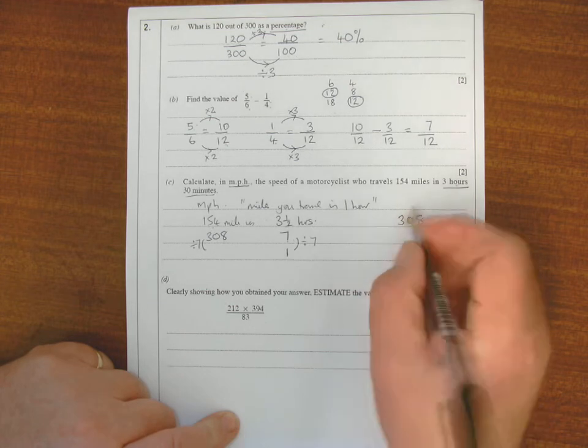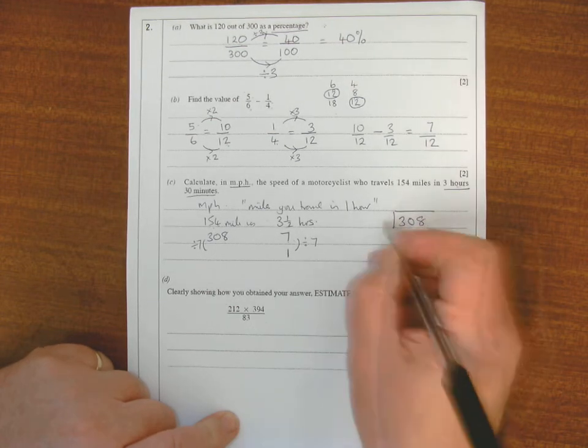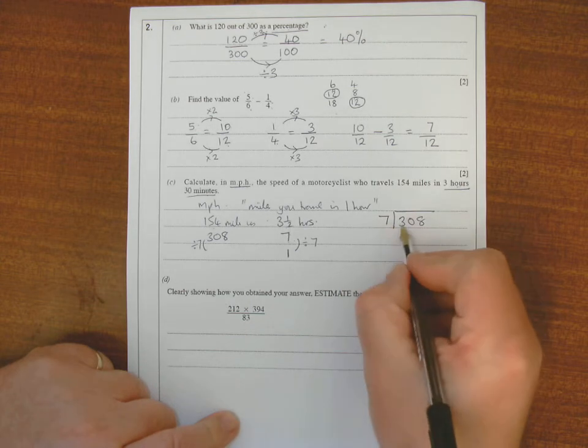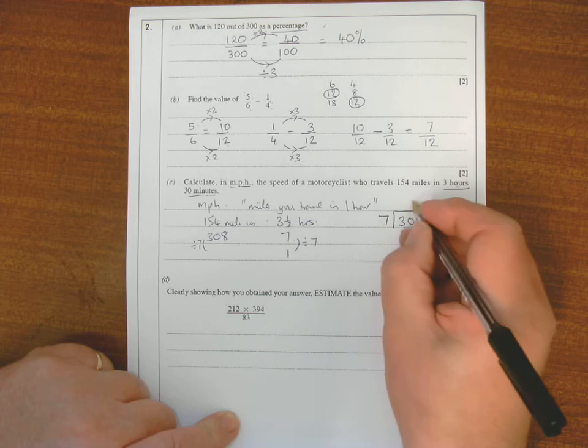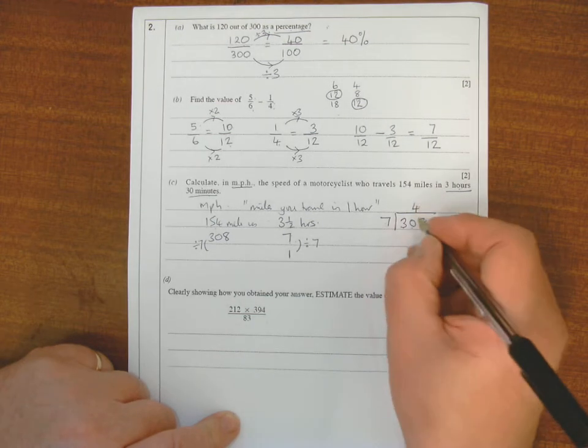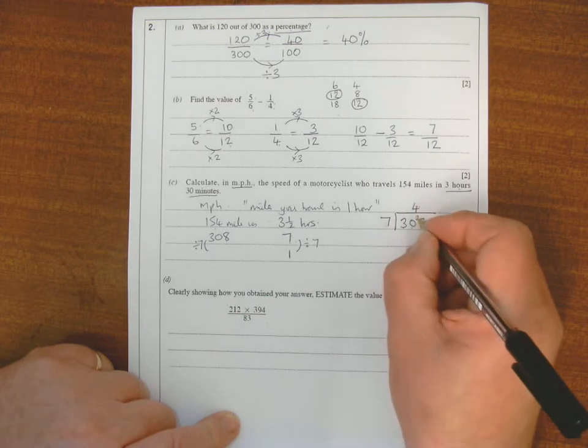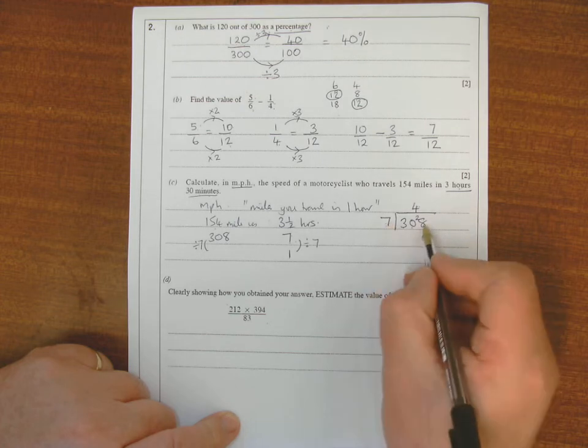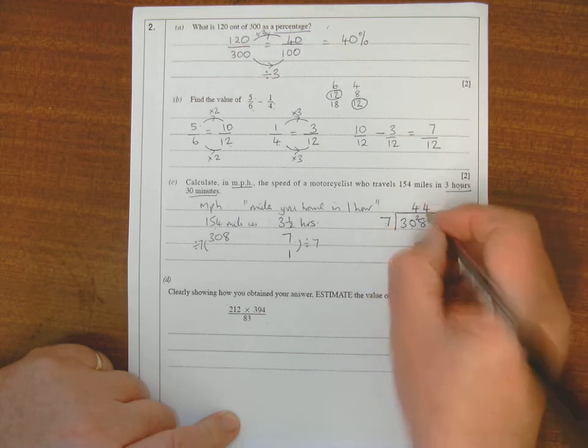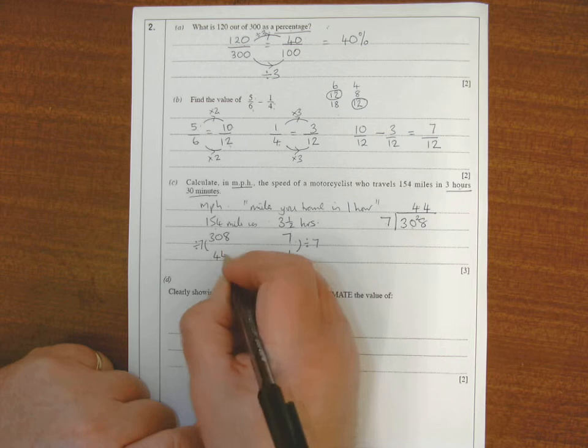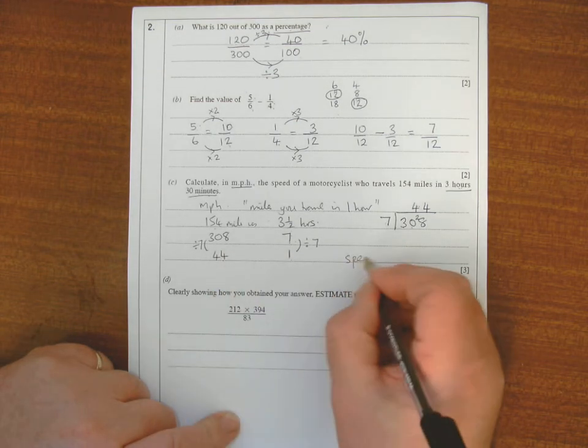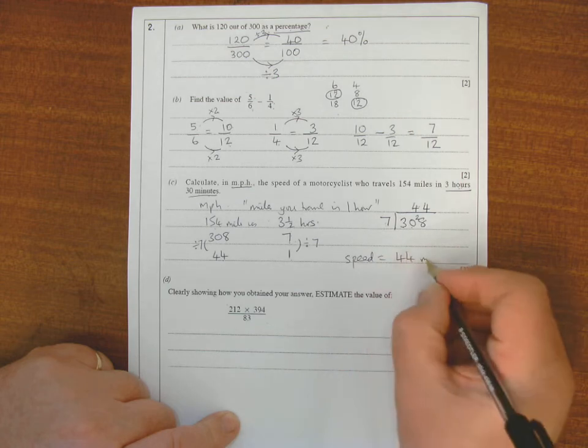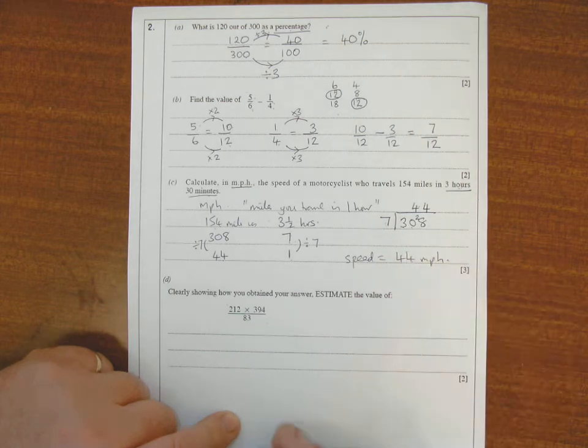So I'm going to use the standard division method to divide 308 divided by 7. 7 into 3 goes once, four. 7 into 30 goes 4 times, 4 sevens is 28, so that's 2 left over. 7 into 28 goes 4 times, so that would be 44. So I travel 44 miles in one hour, so my speed is 44 miles per hour.